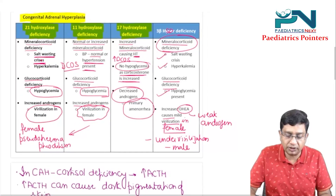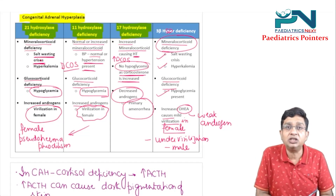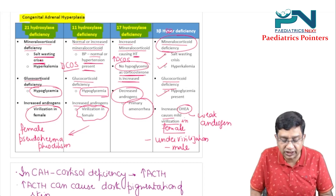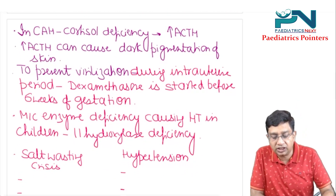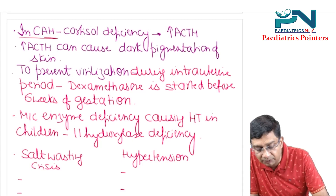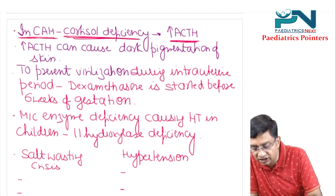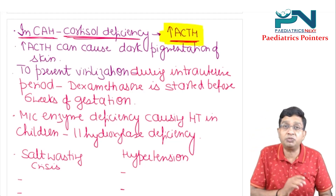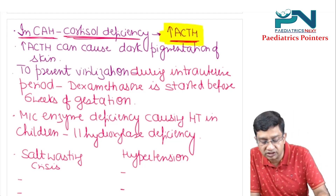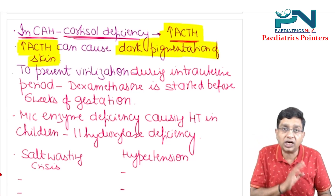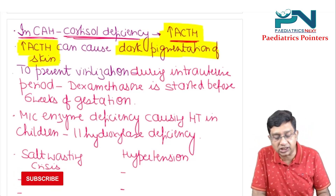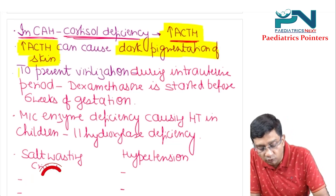These are the important points regarding the four enzyme deficiencies: 21, 11, 17, and 3-beta HSD. There are other things you should always remember in CAH: there is always cortisol deficiency, which increases ACTH. Increased ACTH will be seen in all four enzyme deficiencies, and due to increased ACTH there is dark pigmentation of the skin, which can be seen in all four enzyme deficiencies.